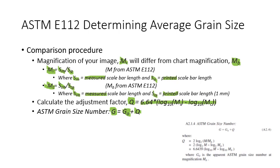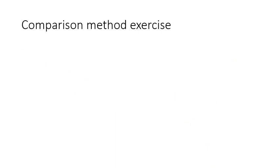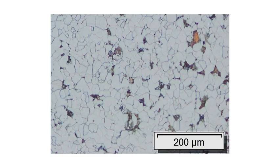Note that the lower right corner shows a screenshot from ASTM E112 showing where the original equations came from to create the formula we use to calculate our magnification adjustment factor Q. Now we're going to do an exercise using the comparison method to estimate grain size. We will estimate grain size for the following image, which is the microstructure for which we'll apply ASTM E112.